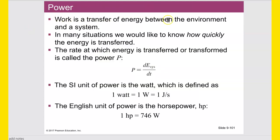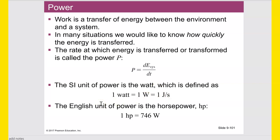Power: work is a transfer of energy between the environment and the system. In many situations we want to know how quickly energy is transferred. The rate at which energy is transferred or transformed is called power P, defined as the change in energy over the change in time, or dE/dt. The SI unit of power is the watt, where one watt equals one joule per second, or one newton-meter per second. The English unit is horsepower, where one horsepower equals 746 watts.